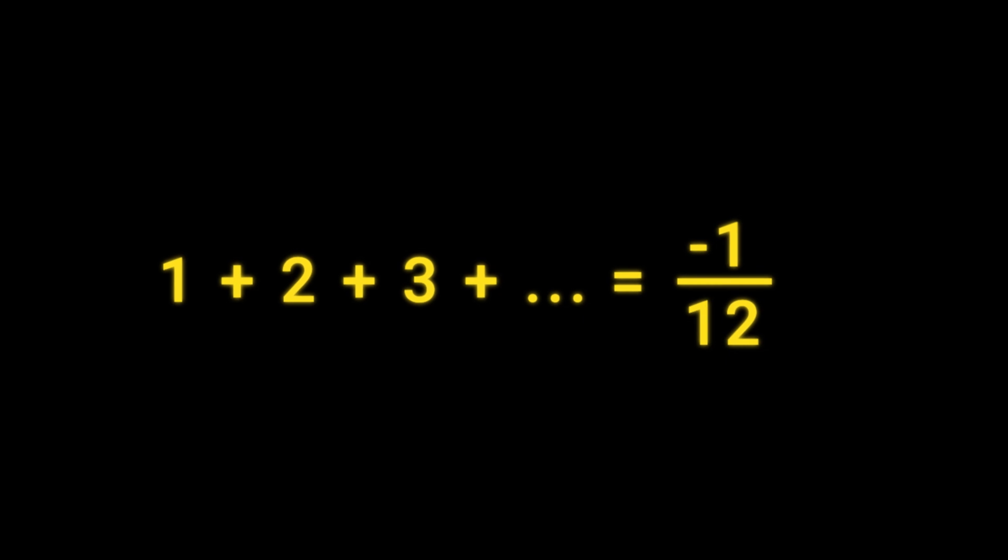I'm going to show you something that will blow your mind. The sum of all natural numbers is equal to minus 1 by 12. Yes, you've heard it right. How is this possible? And what does that mean? Let's find out.